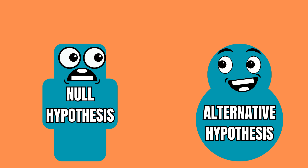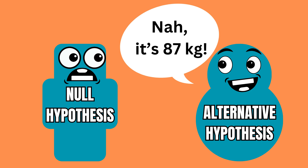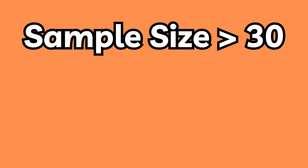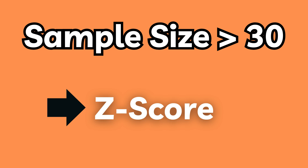In this case the null hypothesis would state that the true mean is 85 kilograms, which was the status quo before the nutritionist arrived. The alternative hypothesis is that the true mean is actually 87 kilograms. As the sample size is 36 individuals, which is more than 30, we can use the z-test instead of the t-test.